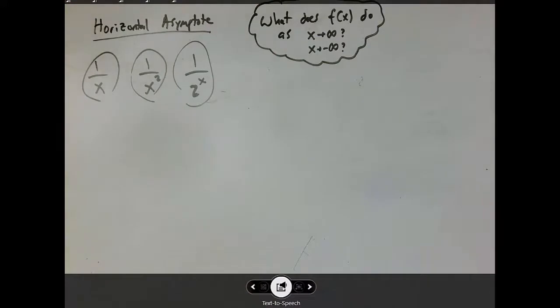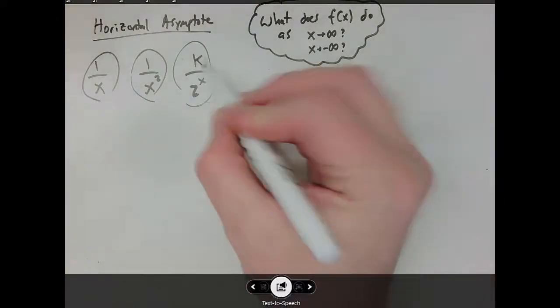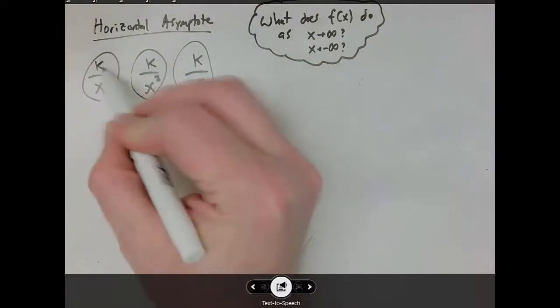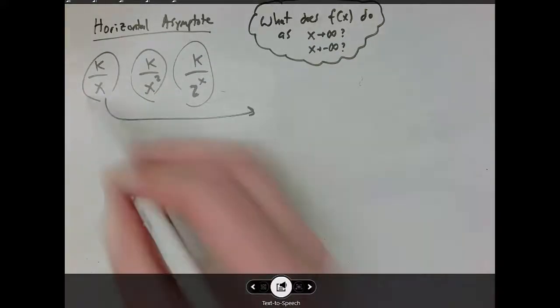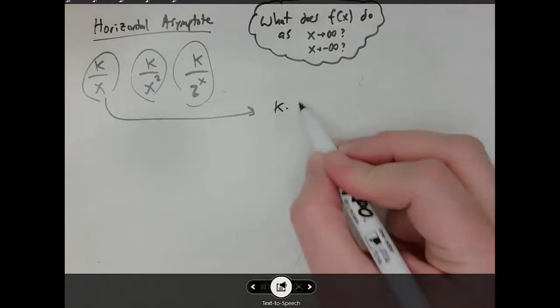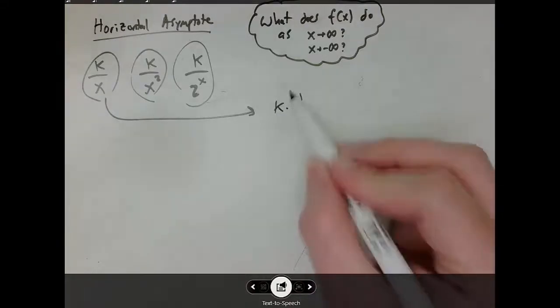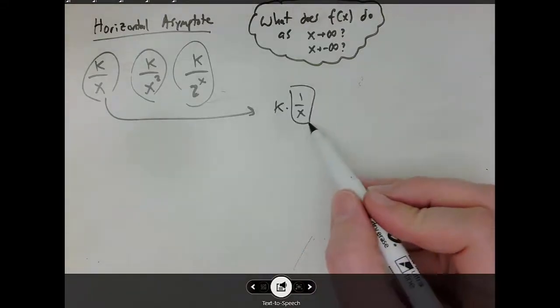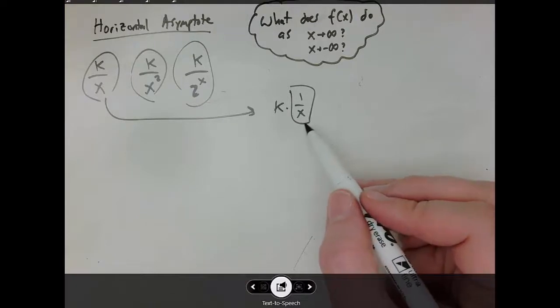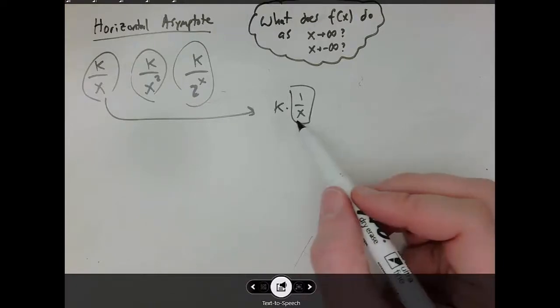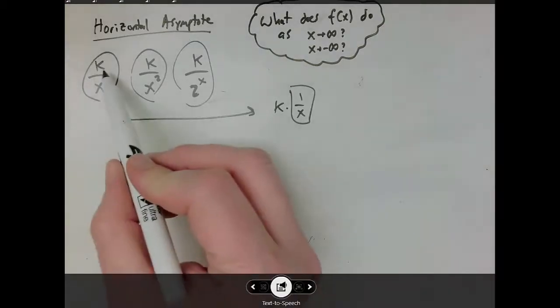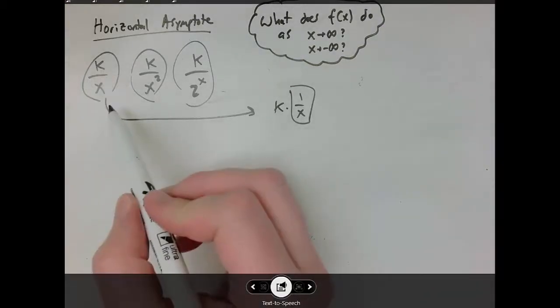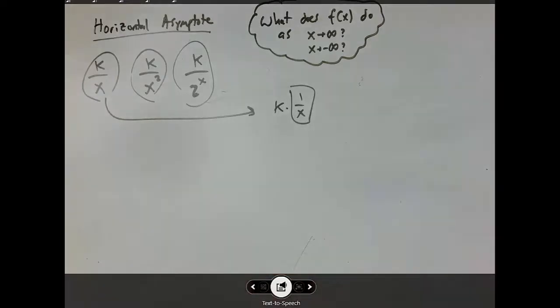If we wanted to generalize it further, we could make these be some fixed constant k, because obviously k over x is the same as k times one over x. So if this approaches zero as x increases, then obviously k times a number approaching zero is also going to approach zero. So any fixed constant divided by an increasing function should have a horizontal asymptote at zero.